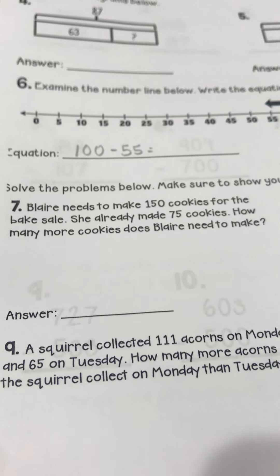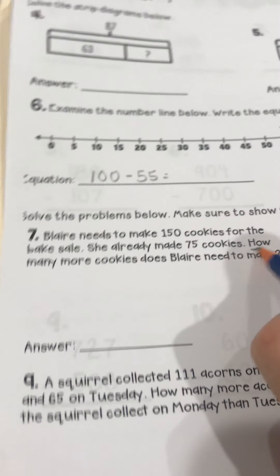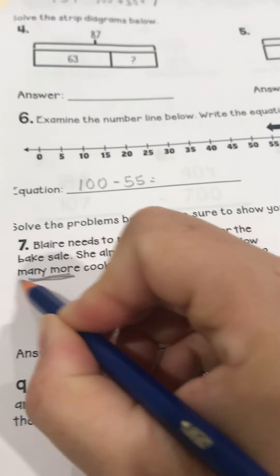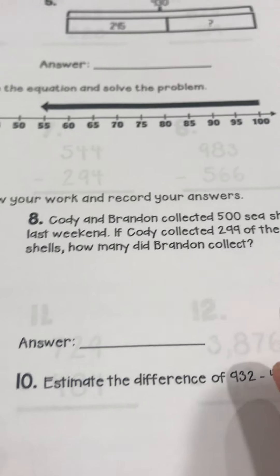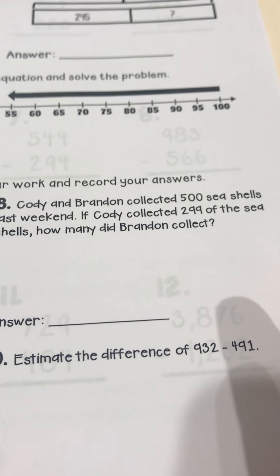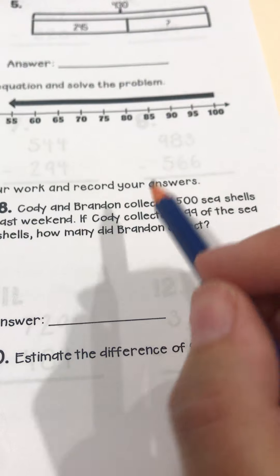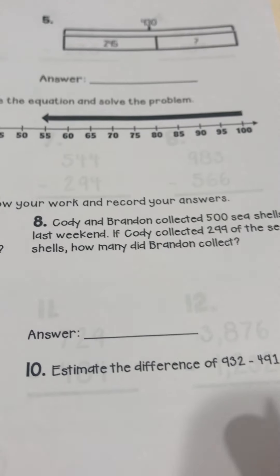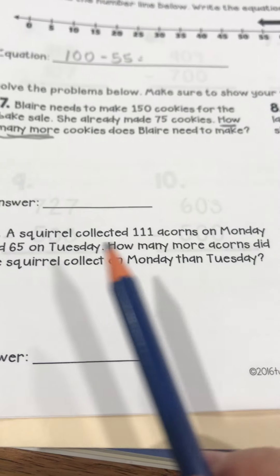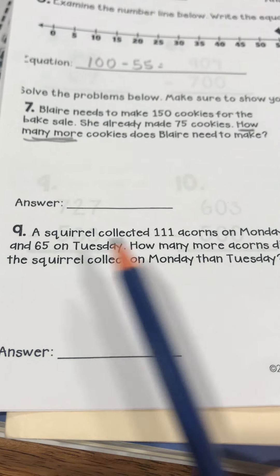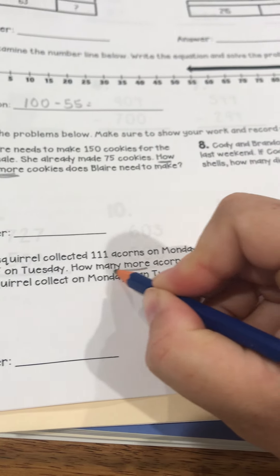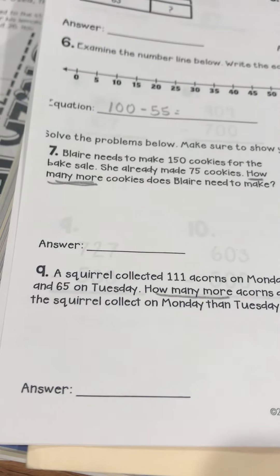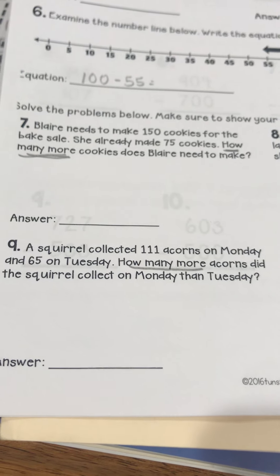Word problem, cookies again. So how many more? Big clue word to subtract. We have Cody and Brandon collecting seashells. We know Cody's, we don't know Brandon's. So we're going to have to subtract to find the difference between those. We have a squirrel getting some acorns on Monday and some acorns on Tuesday. There's our clue word. How many more? Tells me to subtract. We want to know the difference between the two days.